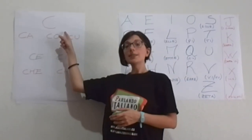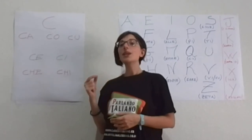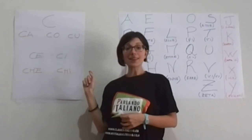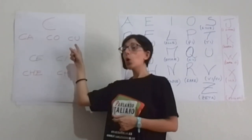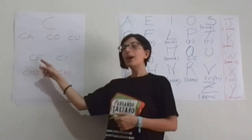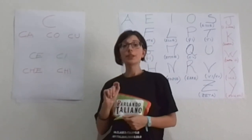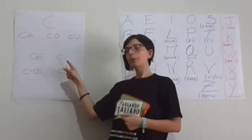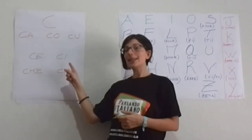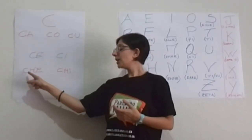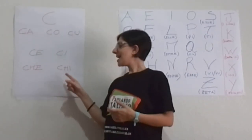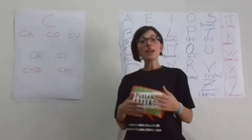La lettera C si pronuncia K quando è seguita dalle vocali A, O, U. E quindi avremo K come in casa, CO come in cosa e Q come nella parola cuore. Quando la lettera C è seguita dalle vocali E e I si pronuncerà C, come in cena e cinema. Se noi vogliamo cambiare il suono C in K davanti alle vocali E e I, dobbiamo introdurre tra la consonante C e la vocale una H. E quindi avremo K come nella parola anche e K come nella parola chiesa.